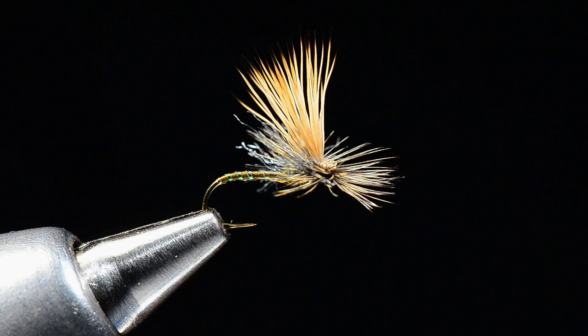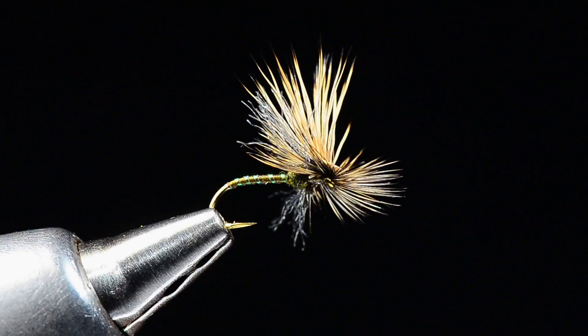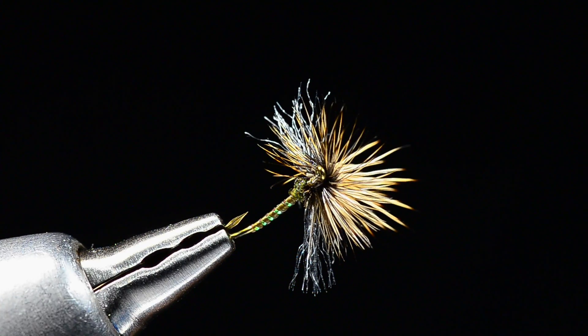Good morning again boys and girls, I'm Charlie Craven and today I'm going to tie for you this little fly here called Mike Mercer's Missing Link. This is a fly that I've always really liked and at the same time I've always hated, and I really like it because it's got such a cool profile.